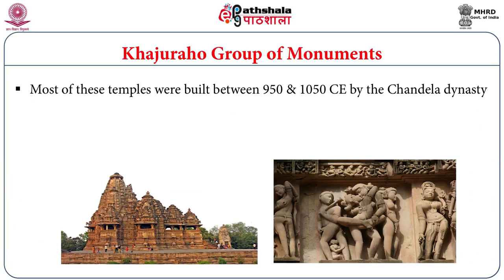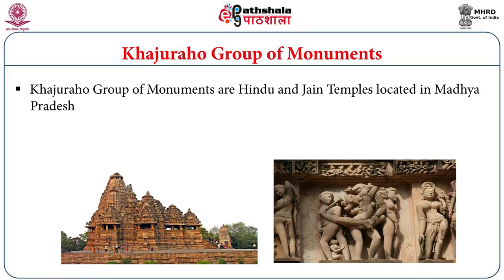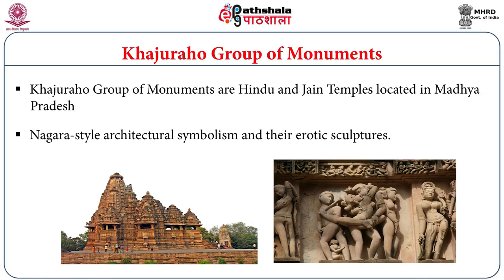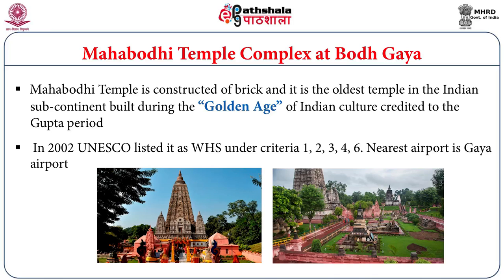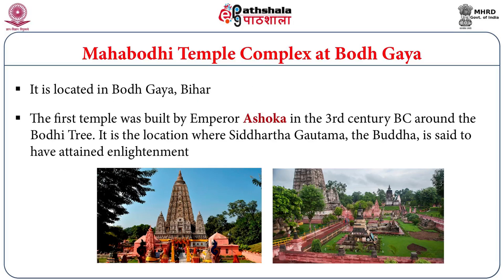The Khajuraho Group of Monuments is one of the best visited and earliest World Heritage Sites, located in Madhya Pradesh, reflecting the Nagara style of architecture and known for its erotic sculpture. The Mahabodhi Temple Complex at Bodh Gaya is a Buddhist site declared as a World Heritage Site in the year 2002, fulfilling the World Heritage Site criteria 1, 2, 3, 4 and 6. It is located in Bodh Gaya in the state of Bihar.